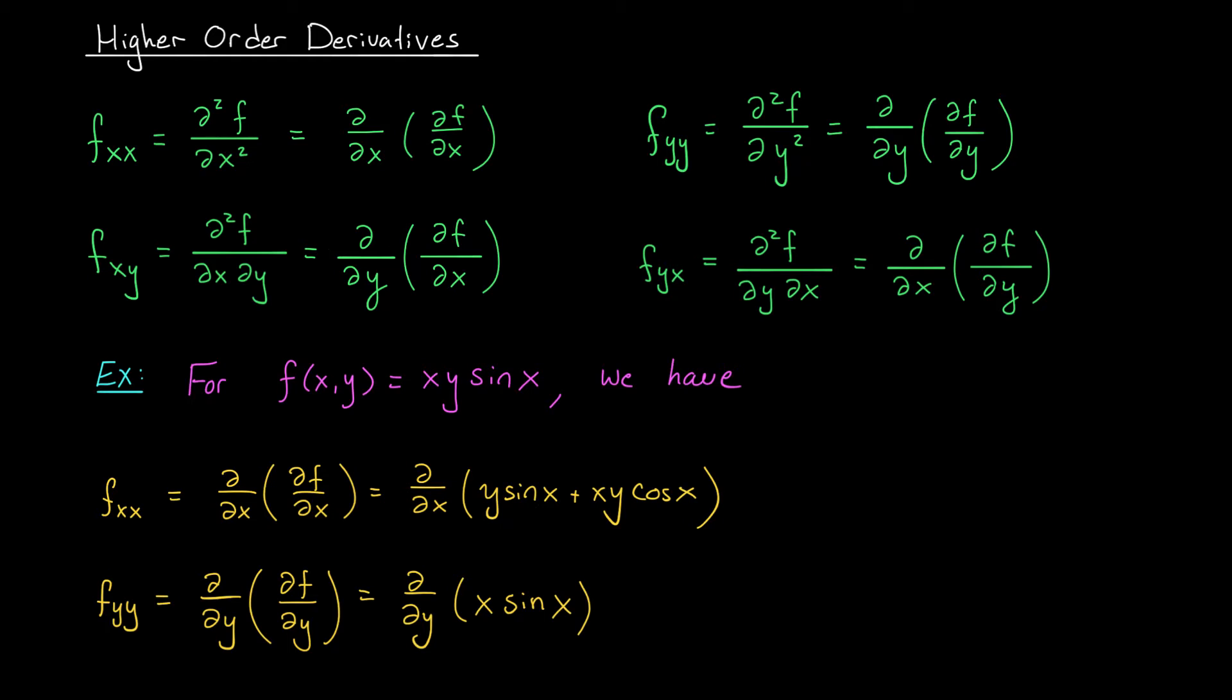So we'll start with fxx. We have to differentiate with respect to x twice. So, here's our first derivative with respect to x that we found on the last slide. If we differentiate one more time, well, this first term is going to become y cos x, and for the second term, we need the product rule. As an exercise, maybe you can work through the computation here. What you should get is plus y cos x minus xy sine x.